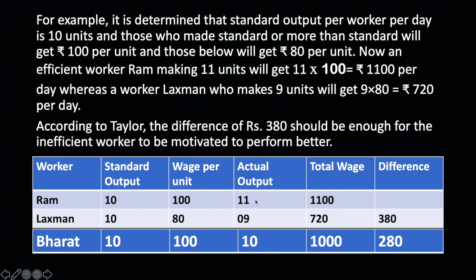If you see the difference: the production difference between RAM and Lakshman is only 2 units, yet the wage difference is ₹380. Even comparing Lakshman with Bharat, he produced just 1 unit less, but the wage difference is ₹280. Taylor believed that this large wage difference would inspire and motivate other workers to do better work and produce more, thereby increasing overall productivity.